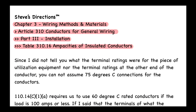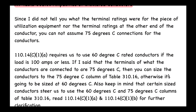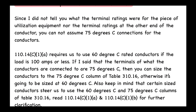Since I did not tell you the terminal ratings for the utilization equipment or the other end of the conductor, you cannot assume 75°C connections. You need to know what's on both sides of the conductor. If one side is rated 75°C but the other is only 60°C, you are limited to the 60°C column. Be especially careful about this on an exam.